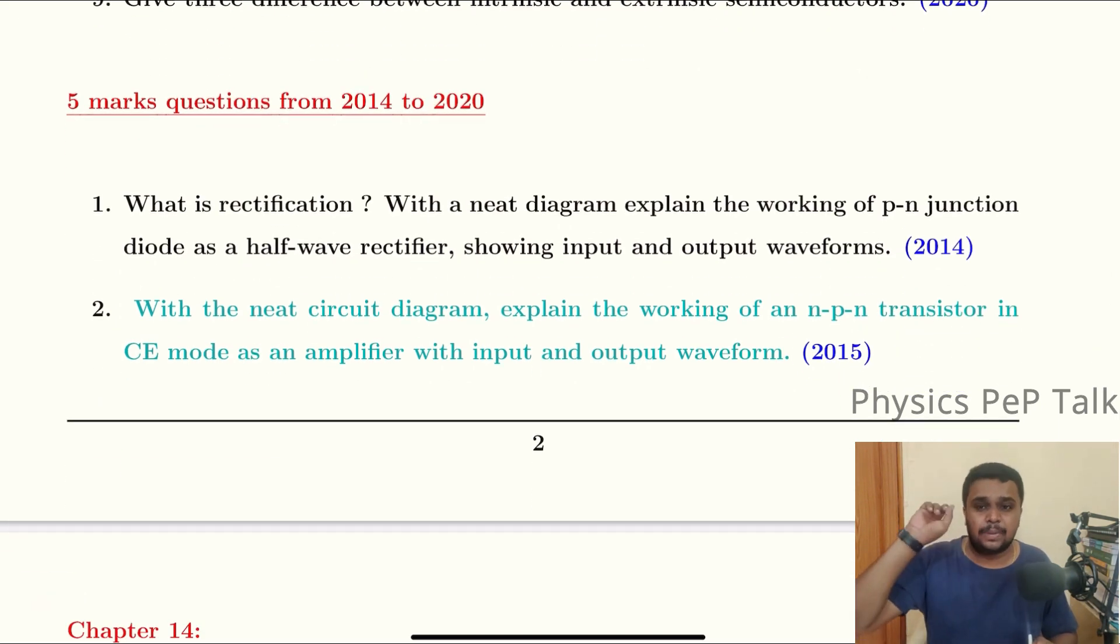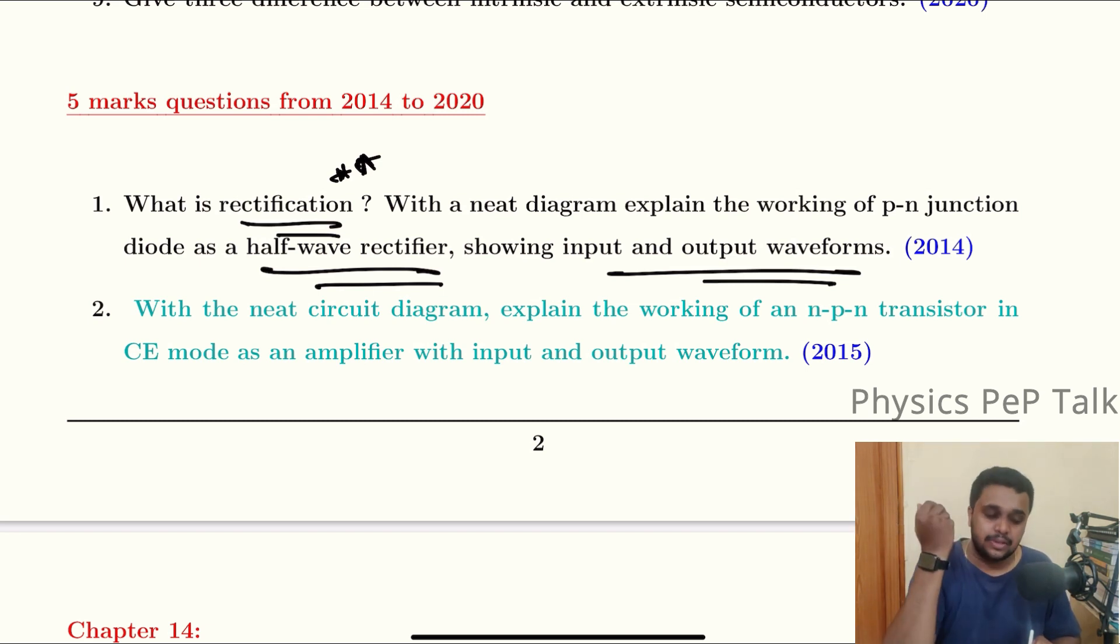Five marks question. What is rectification? The process of converting AC into DC is called rectification. This is 1 mark. Next, with a neat diagram, explain half-wave rectifier with input and output waveforms. Half-wave rectifier and full-wave rectifier - you can use 5 marks. In the final exam, you are learning the input and output waveform. In this explanation, you will have a playlist of 5 marks with full complete questions.